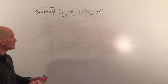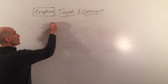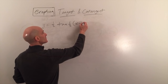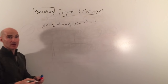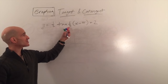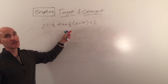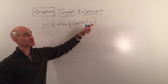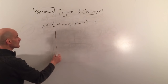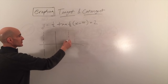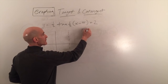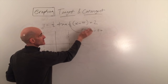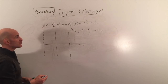Let's graph y equals one half tangent of (one half x minus pi) plus 2. Just like with sine and cosine, we graph the parent function using the amplitude (a value) and the b value which affects the period. The period is pi divided by one half, which equals 2 pi. The minus pi shifts the graph right pi, and plus 2 shifts it up 2.